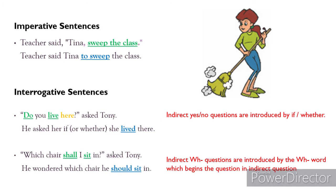Now look at interrogative sentences — these are questions. The first question is a yes/no question: 'Do you live here?' asked Tony. You can change this into reported speech as: He asked her if she lived there, or you can use 'whether': He asked her whether she lived there. The second question is a WH question: 'Which chair shall I sit in?' asked Tony. This changes into reported speech as: He wondered which chair he should sit in. Indirect WH questions are introduced by the WH word that begins the question.